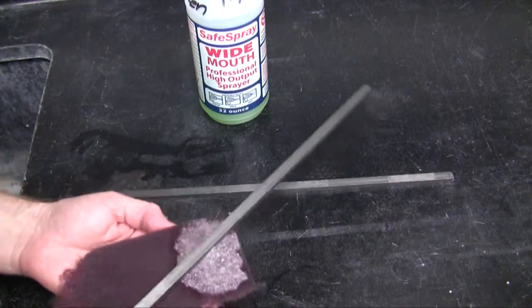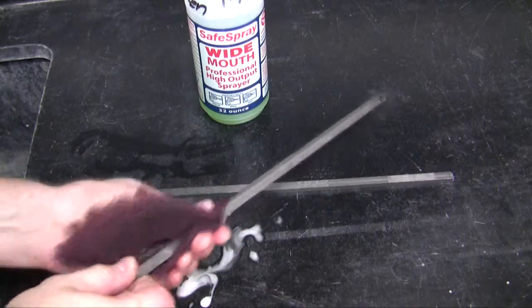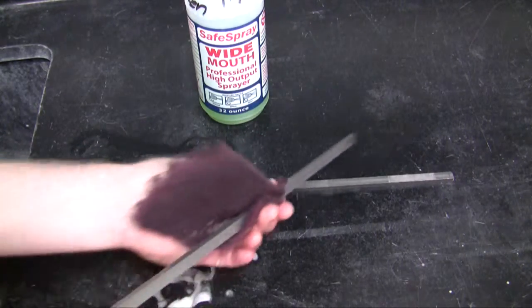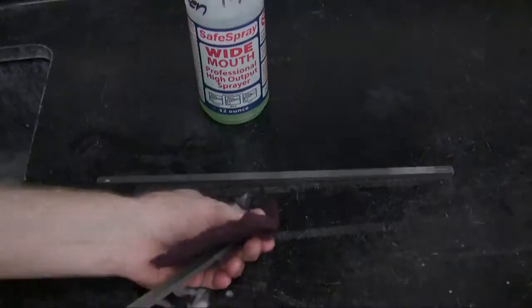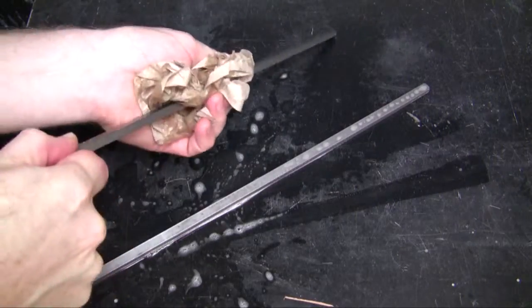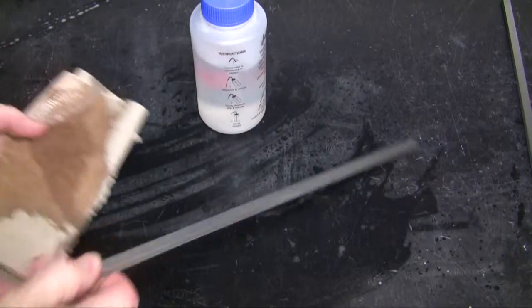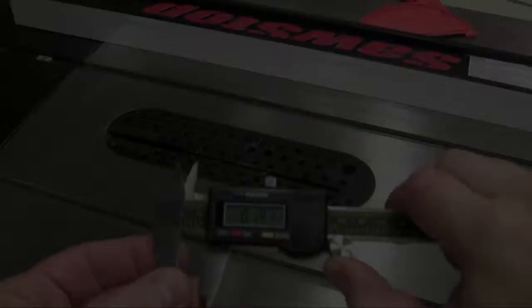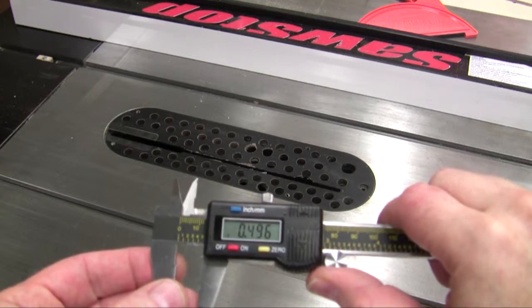Take some Simple Green and put it on a Scotch-Brite pad, and then we want to get all the grime and dirt and grease off of the rod because we need to have a very good gluing surface for it to be installed. Scrub it, wipe off the Simple Green, and then give it an alcohol wipe. This will prep the surface for gluing.